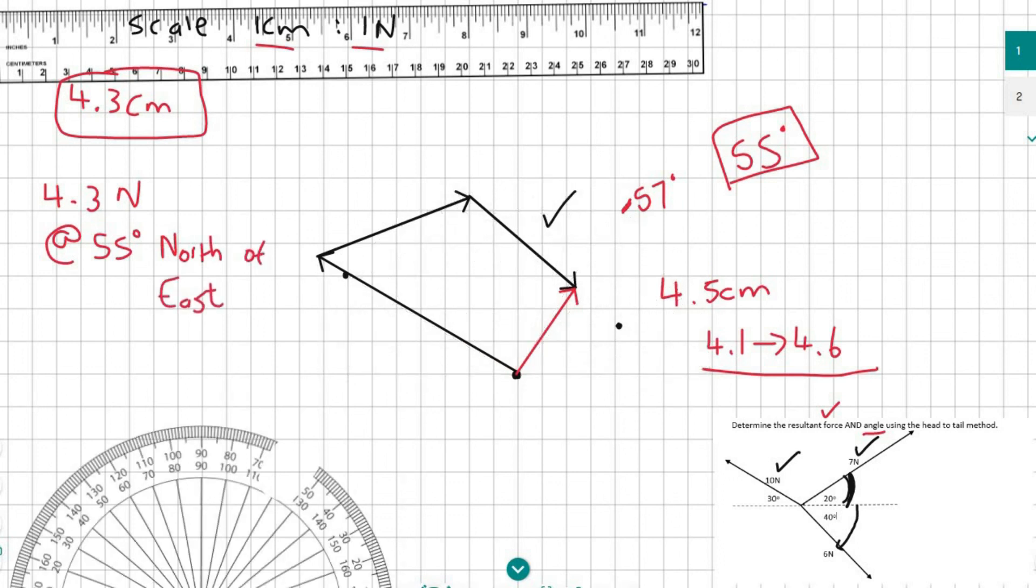The reason I say north of east is that we are measuring that angle relative to this line over here. And so this is the east line, and we are measuring towards the top of that. So we're measuring north of that. So we'll say 4.3 newtons at 55 degrees north of east.